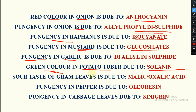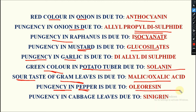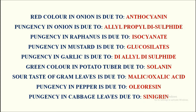In tomato, red color is due to lycopene. In gram leaves and pulses, sour taste is due to malic or oxalic acid. In pepper, pungency is due to oleoresin. In cabbage leaves, pungency is due to sinigrin. You can take a screenshot of these as well.